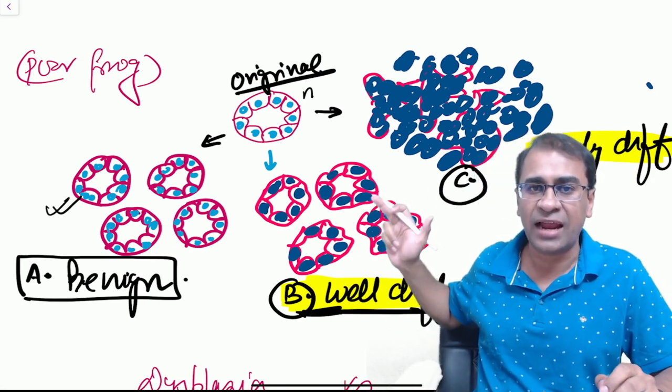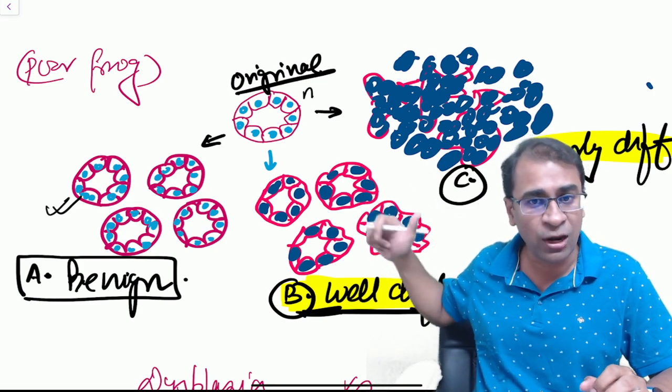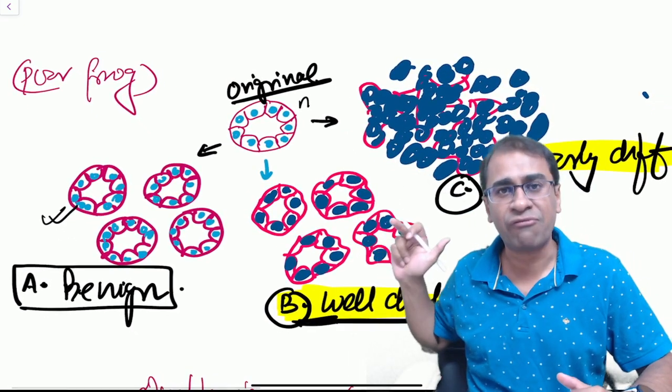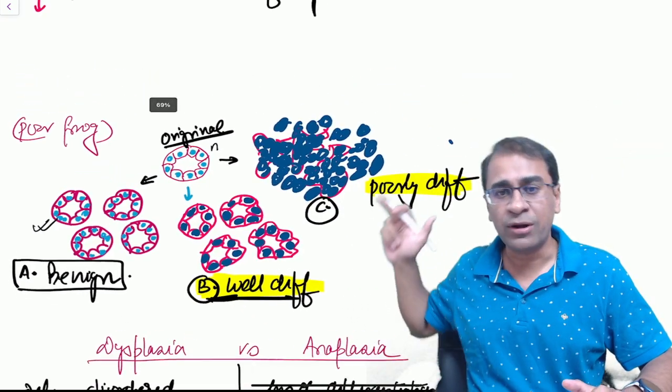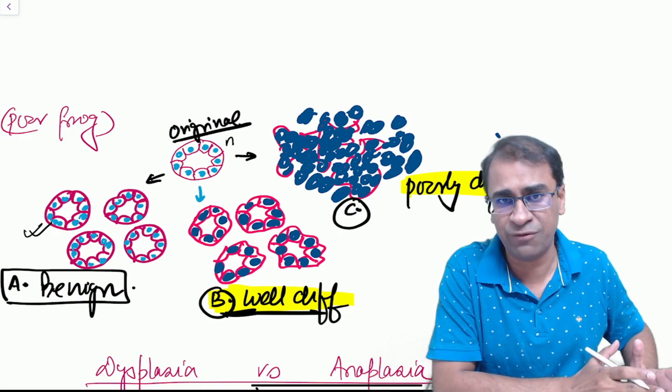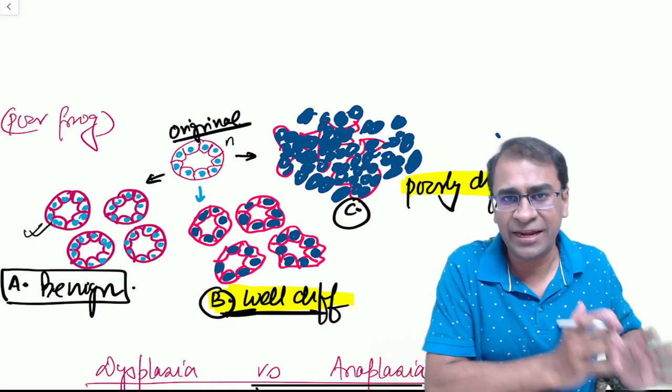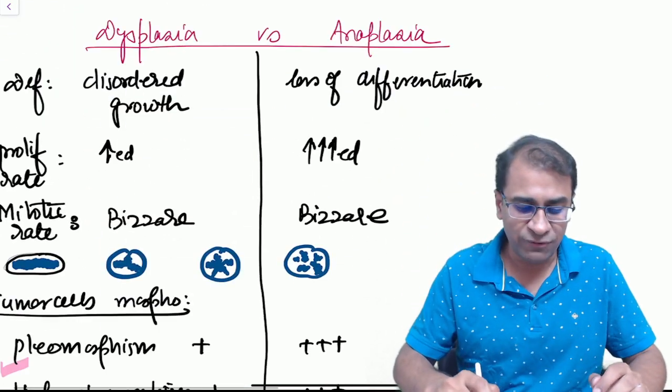The cells here are hyperchromatic, pleomorphic, high N:C ratio, but the cells or glands here are looking like the original gland. This becomes a well-differentiated adenocarcinoma. But when the glands become completely anaplastic, you can't be able to differentiate whether the cells are glands or not. It is called poorly differentiated adenocarcinoma.